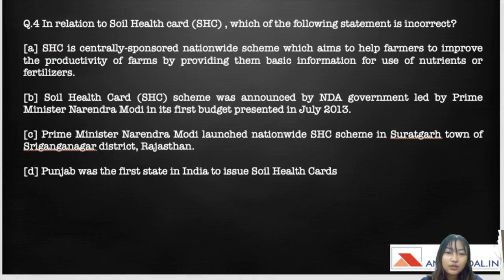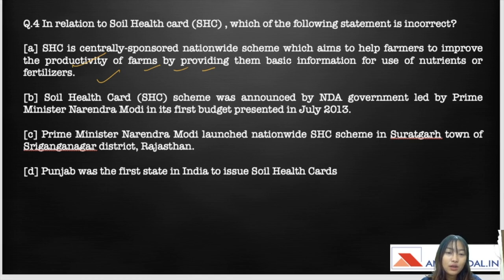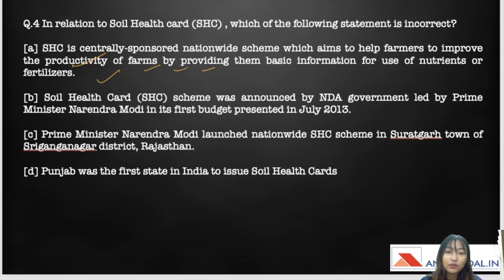The fourth question asks: in relation to the Soil Health Card (SHC), which of the following statements is incorrect? A: SHC is a centrally sponsored nationwide scheme aiming to help farmers improve farm productivity by providing basic information on nutrient and fertilizer use. B: The SHC scheme was announced by the NDA government led by PM Narendra Modi in its first budget presented in July 2013. C: PM Modi launched the nationwide SHC scheme in Suratgarh, Sri Ganganagar district, Rajasthan. D: Punjab was the first state in India to issue the Soil Health Card. Please comment your answer below.